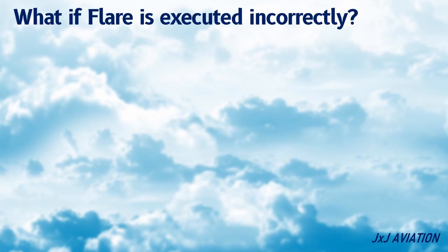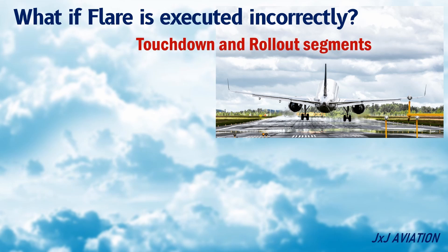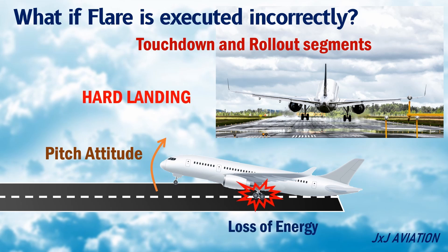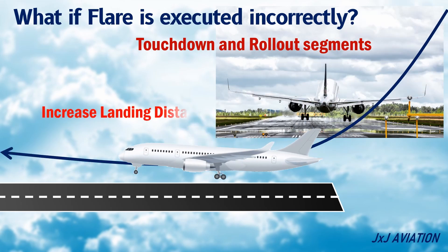What if the flare is executed incorrectly? If the flare is executed incorrectly there may be an impact on the touchdown and the rollout segments. If the pitch attitude is increased more than the desired angle then there is a sudden loss of energy which will result in a hard landing. Improper flare may also result in a delay in the touchdown of the main landing gear, which can cause an increase in the aircraft's landing distance.